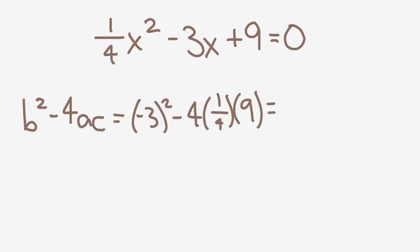Negative 3 squared is 9. Here we have 4 divided by 4, which cancel each other out. So we'll have negative 1 times 9, which is negative 9. So 9 minus 9 equals 0. And when b squared minus 4ac equals 0, then there is one distinct real root.